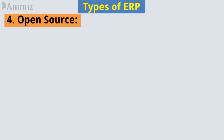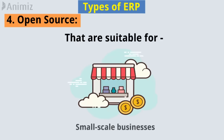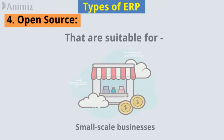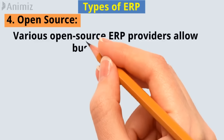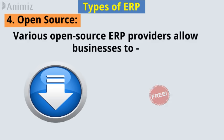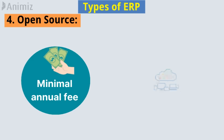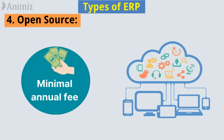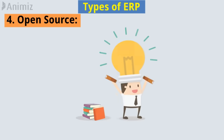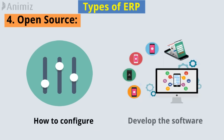Number four: Open-source ERP. It is like other inexpensive, or sometimes free, open-source solutions that are suitable for some small-scale businesses. Various open-source ERP providers allow businesses to download their software for free, and they will then be charged a minimal annual fee for cloud access. For this, you need a person with deep knowledge of how to configure and develop the software.